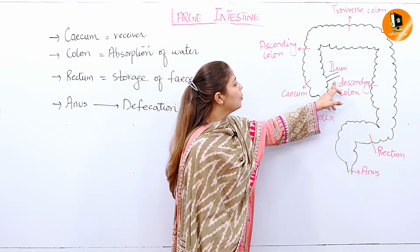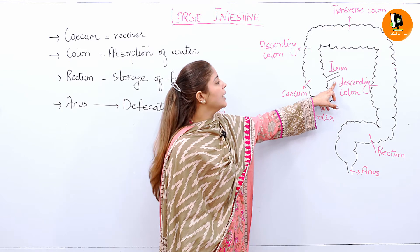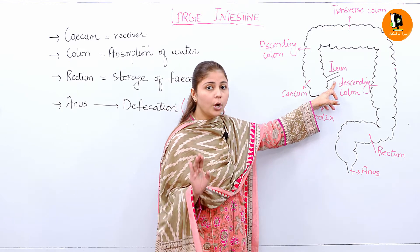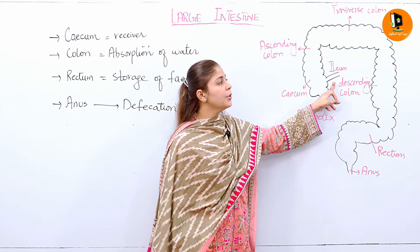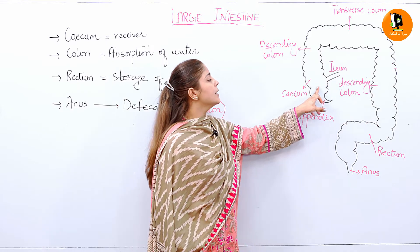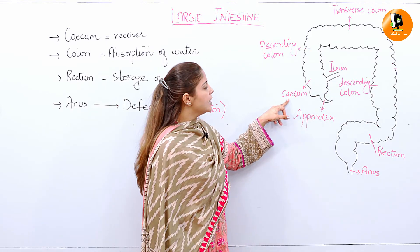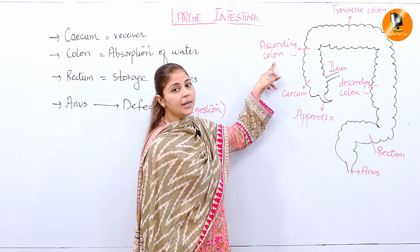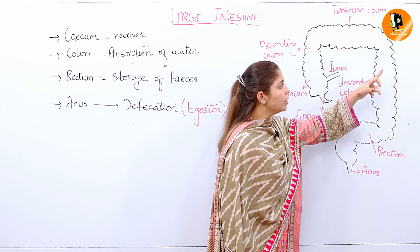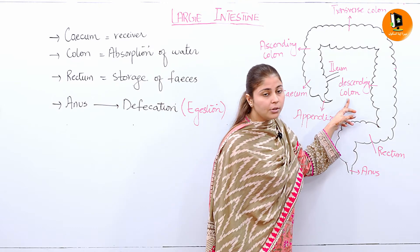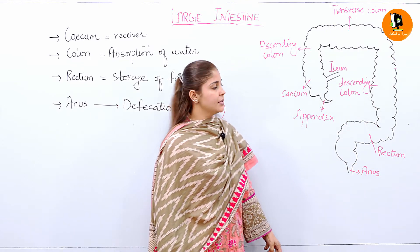The opening comes from the ileum. The ileum is connected with the absorption of blood, but the remaining undigested food — wo ileum pass kardega cecum ko. This is the cecum, this is the ascending colon, transverse colon, descending colon, rectum, and the last is anus.